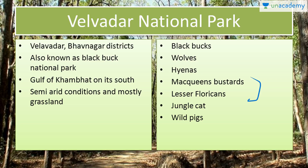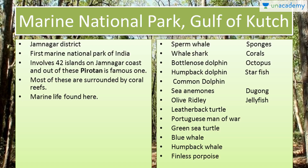Next is Marine National Park at Gulf of Kutch. It is near Jamnagar district. It was the first Marine National Park of India. It involves 42 islands on the coast and the most famous one is Pirotan. This national park is surrounded by coral reefs from all sides. You will find here marine life like sperm whale, whale shark, bottlenose dolphin, humpback dolphin, common dolphin, olive ridley, leatherback turtle, Portuguese man-of-war, green sea turtle, blue whale, humpback whale, finless porpoise, sponges, corals, octopus, starfish, dugong and jellyfish.